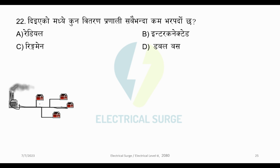A radial distribution system is one where power is distributed radially from a single power source. It is the cheapest and easiest method of distribution. However, its reliability is very low — if a line breaks or a circuit fault occurs, consumers lose electricity. So radial is the cheapest but has the least reliability.